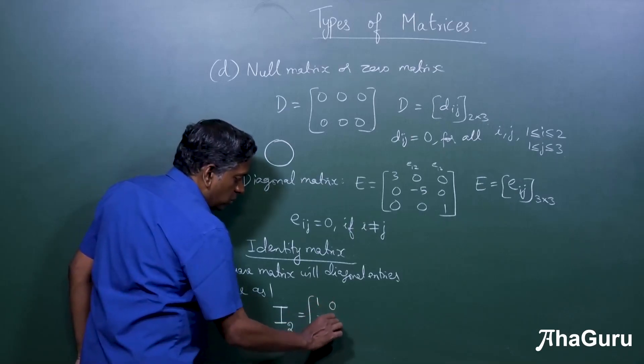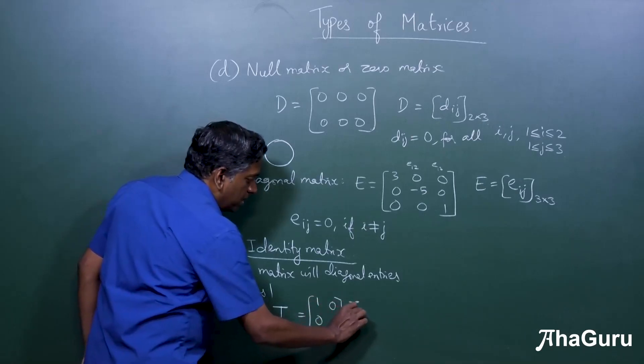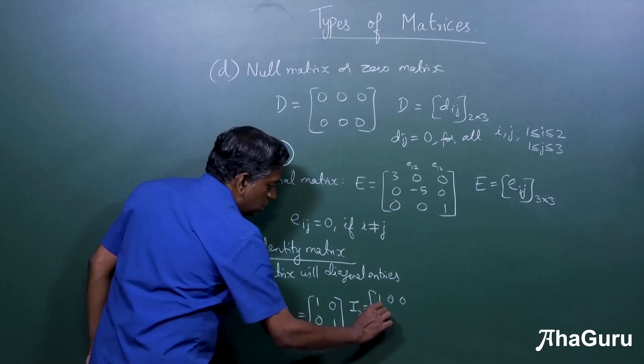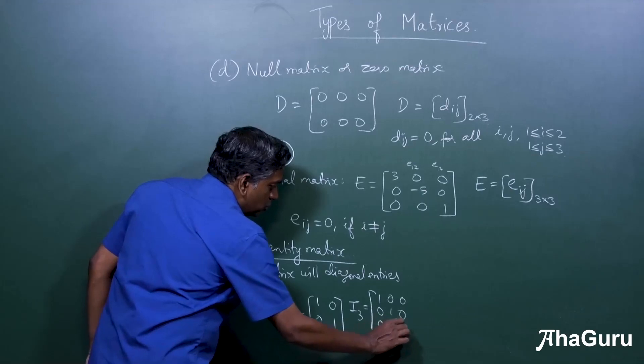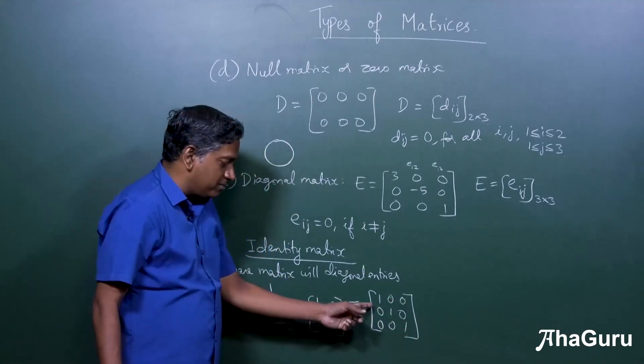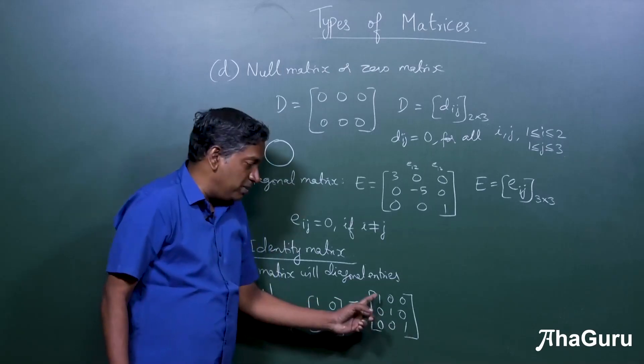i2 is one zero zero one. i3 is one zero zero, zero one zero, zero zero one. You can imagine i4 will be a four by four matrix where all the diagonal entries will be one.